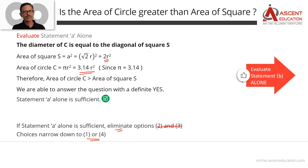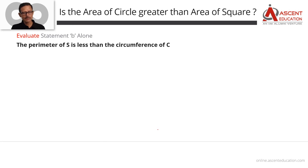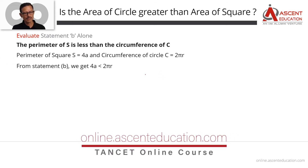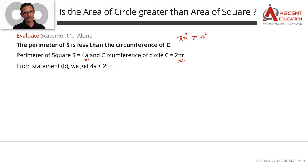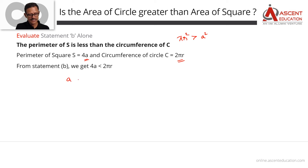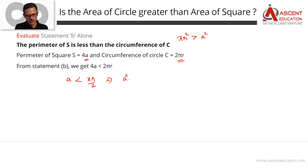Now let's evaluate statement B. Statement B says: the perimeter of square S is less than the circumference of circle C. The perimeter of a square is 4a. The circumference of a circle is 2πr. So we have 4a < 2πr. Dividing both sides by 4: a < πr/2. Squaring both sides: a² < (πr/2)² = π²r²/4.